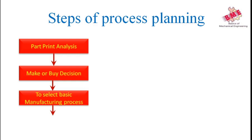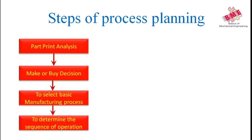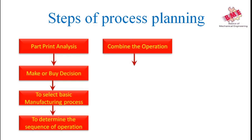After the make or buy decision, the third step is to select the basic manufacturing processes. Once the decision to manufacture the part is made, we determine which basic processes like casting or forging are to be performed. The fourth step is to determine the sequence of operations — once the manufacturing process is selected, the sequence is determined, such as first casting or purchasing raw material as a shaft, then changing its diameter by turning, followed by shaping and milling.